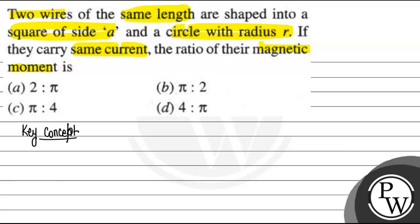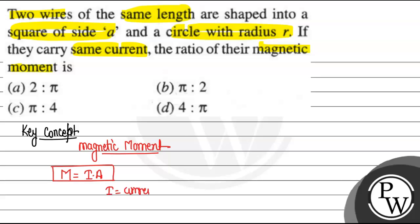The formula for magnetic moment — magnetic moment M is equal to i times A, that is current times area. Here i is the current of the loop, the current which is flowing in the loop, and A is the area of the loop.